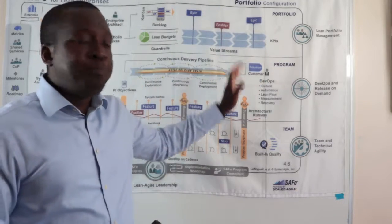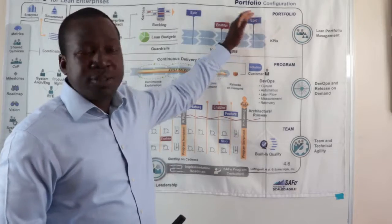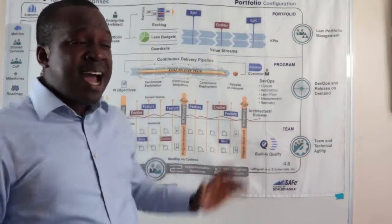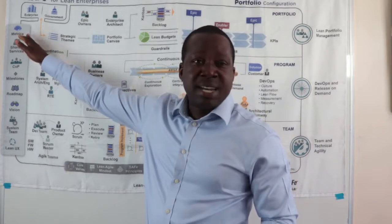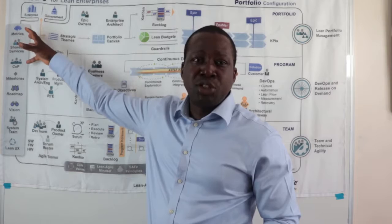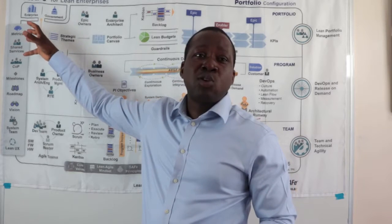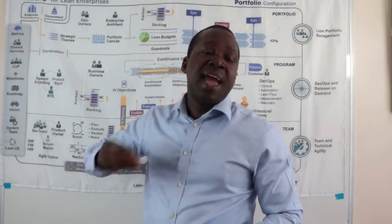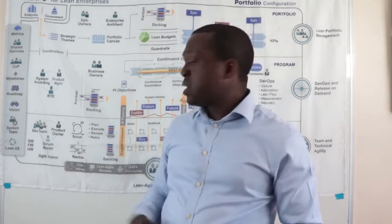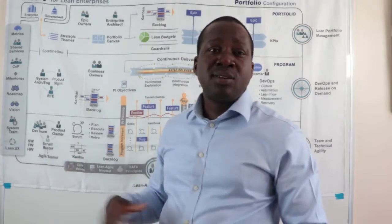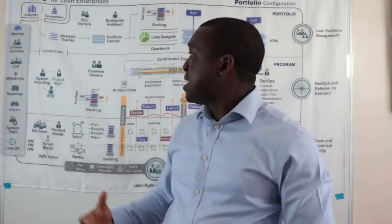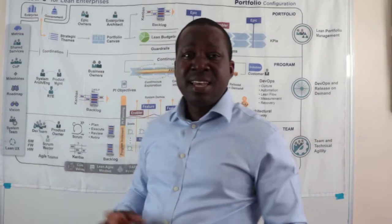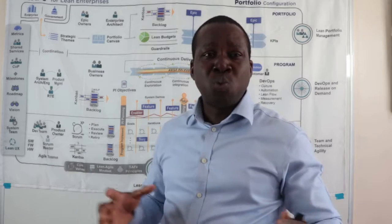The portfolio configuration has two supporting palettes. The first palette covers the metrics and reports that we need to ensure we are always collating, learning and improving in our processes. At a team layer, we might collect information from our burn-up charts, our cumulative flow diagrams, our metrics, and then we've got our shared services that would help support where needed.